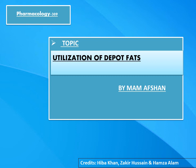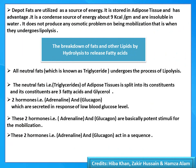Yesterday we discussed the synthesis of adipose fat, that is depot fat triglyceride. Today I am going to discuss the utilization of depot fat. The depot fat is utilized as a source of energy; it is stored in the adipose tissue and has advantages in that it is a condensed source of energy, about 9 kilocalories per gram.